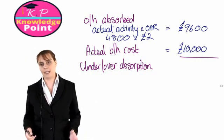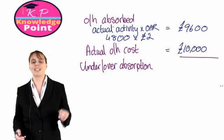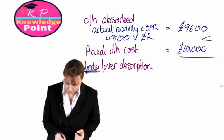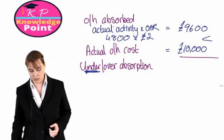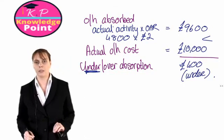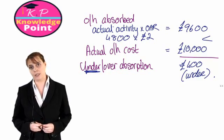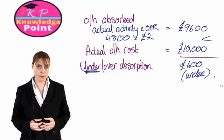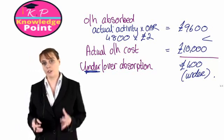Now we can calculate any under or over absorption. Remember, if our overhead absorbed is less than our actual overhead cost incurred, then we have under absorbed — we have not charged enough in fixed production overheads to our production account. The difference is £400, so this is our under absorption. Now when we do our profit calculation, in an absorption costing system we need to show our overhead absorbed and our under or over absorption separately. So once we've calculated our under absorption, we can move on to our profit calculation.